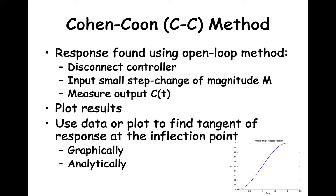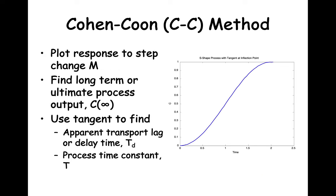The analysis can be done either graphically, the way we will do things, or analytically. The first step is to plot the process response to the step change M with respect to time. Then we can draw a tangent to the inflection point. We need to find the long-term process output value, which we will label as C infinity.